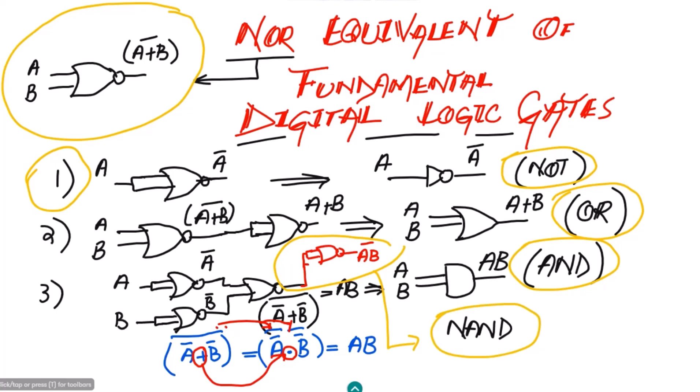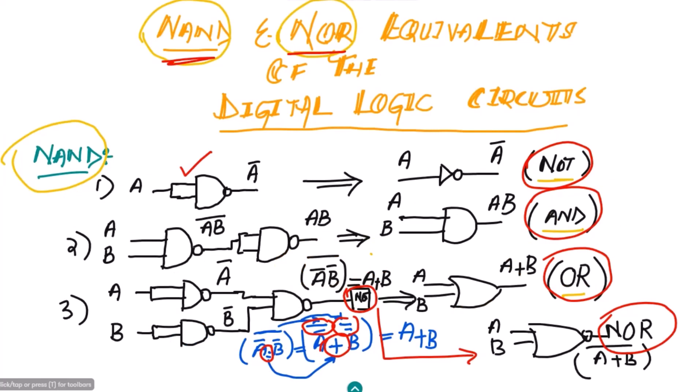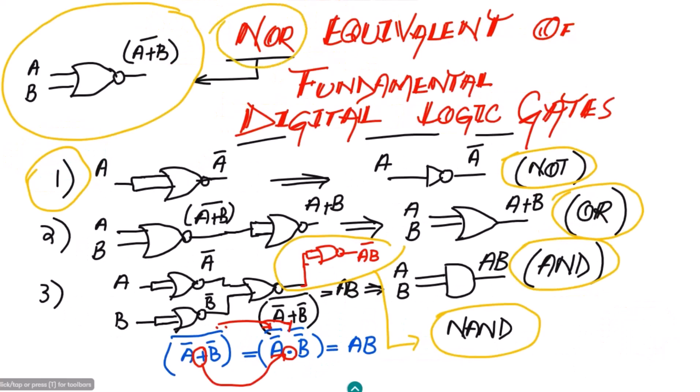That is it for today. Previously we saw the equivalence of fundamental logic gates using the NAND gate due to its universal property. Similarly, in today's lecture we covered the universal property of the NOR gate — any logic gate can be created using just NOR gates. From the next lecture we will solve related exercise questions and see how equivalent circuits are helpful in constructing different logic gates. Take care of yourself!